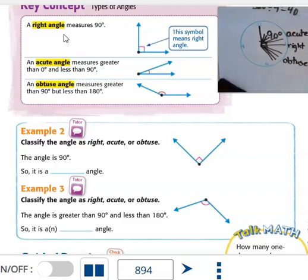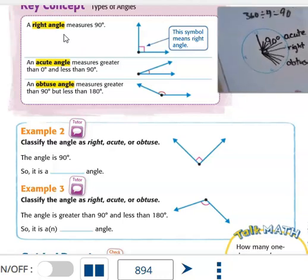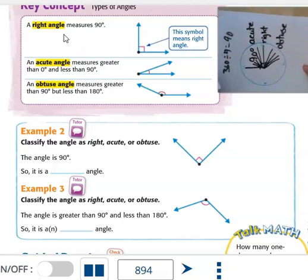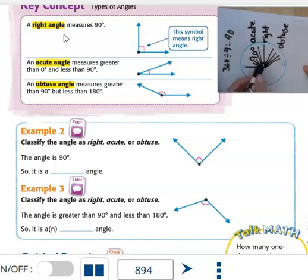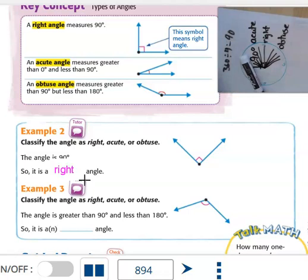When they've rotated this, like they have in example one, our endpoint is at the bottom. They're showing this little box symbol here, which tells me that it's a 90-degree angle. So it is a right angle, because 90 degrees is a right angle.